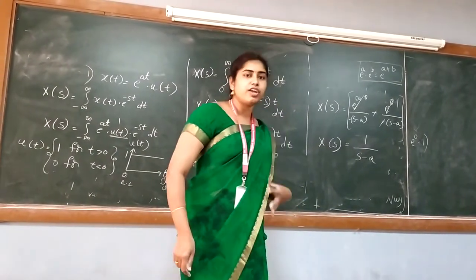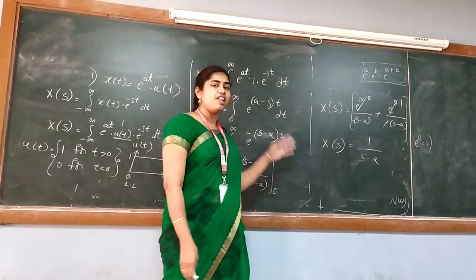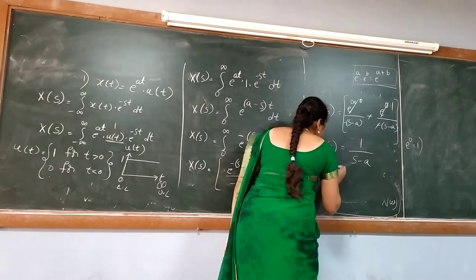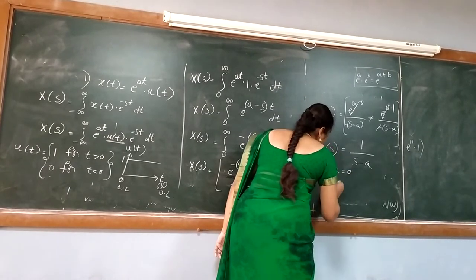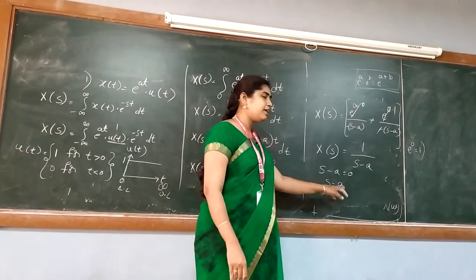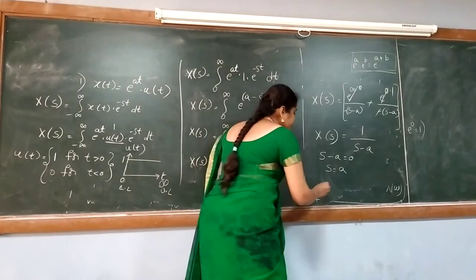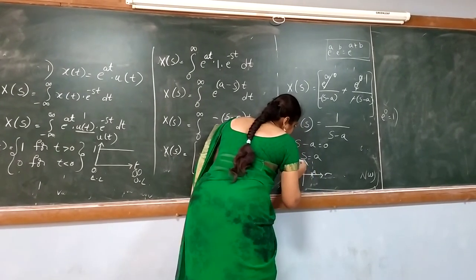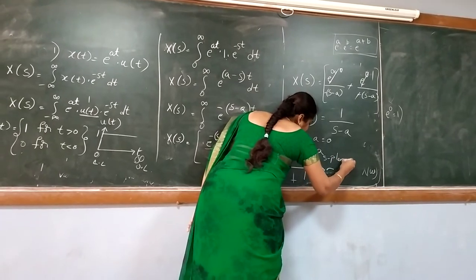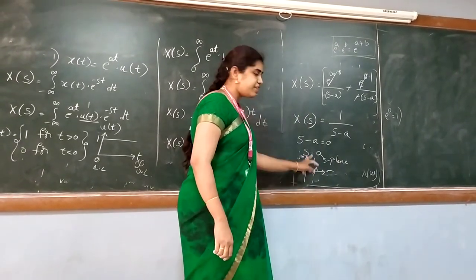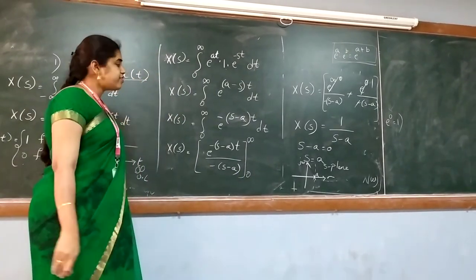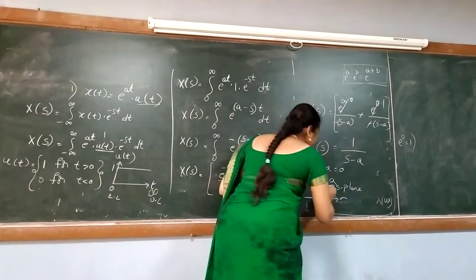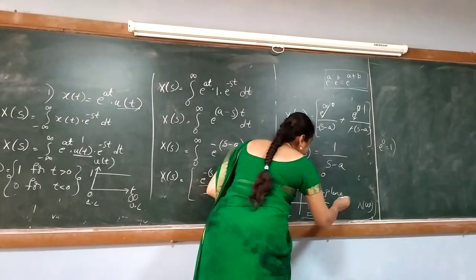If you want to get the poles and zeros to draw the graph — for Laplace transform, the graph is called the S-plane. To find the pole, make the denominator equal to 0: S − a = 0 gives pole at S = +a. With this pole, you can draw the S-plane graph. On the x-axis I draw σ and on the y-axis ω. The region of convergence depends on where S converges.